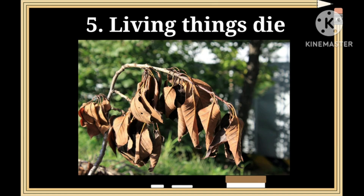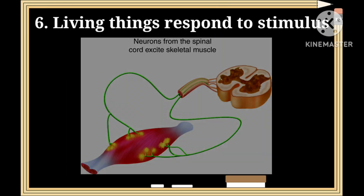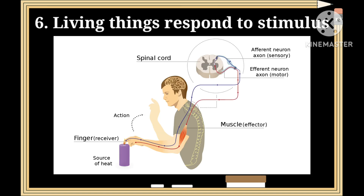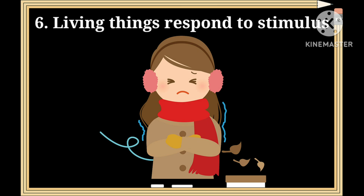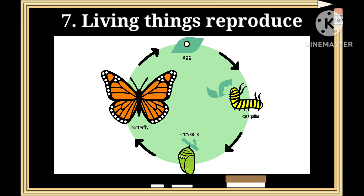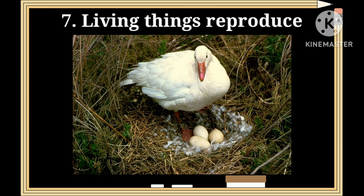For example, sunflowers move in the sun's direction. Number five: living things die — all living things grow, become old, and finally die. Number six: living things respond to stimulus — they react to changes in their environment, such as touch, light, heat, cold, and sound. Number seven: living things reproduce — all living things produce new organisms of their kind; some animals produce babies and some lay eggs.